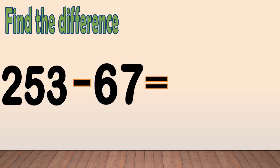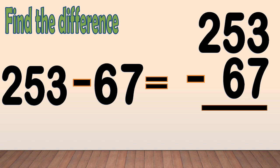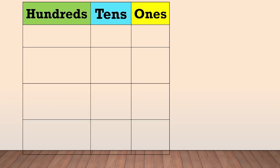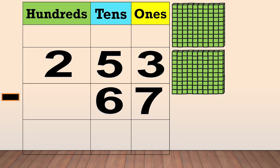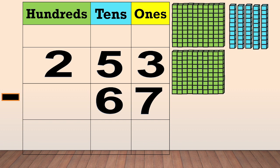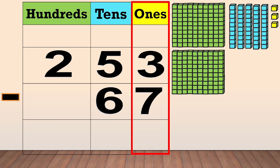Another example. Find the difference: 253 minus 67. Arrange the numbers in columns like this. Place the digits of the number in columns based on its place value. 253 has two hundreds, five tens, and three ones. First, we subtract the ones: three minus seven — we cannot subtract seven from three, so we need to regroup one ten into ten ones.